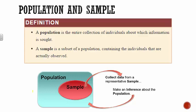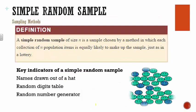Once I get information from that sample — if I chose it well enough — I can use it to make inferences about the population. This picture pretty much tells it all: you have your whole population, within that population you have a sample, and from the sample we collect data and then use it to make inferences back onto the entire population, finding out information about everyone even though we didn't look at everyone.